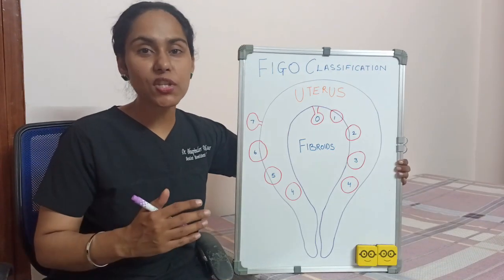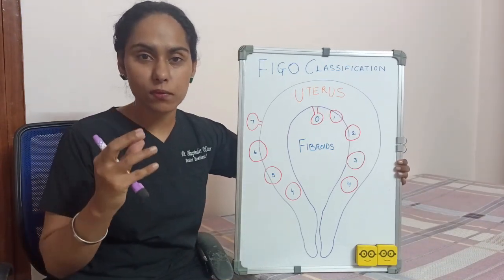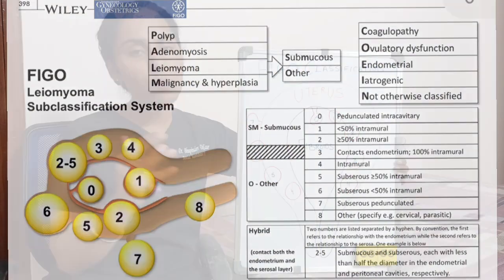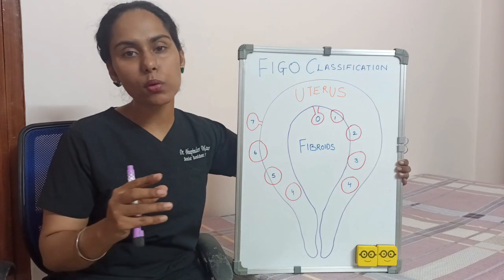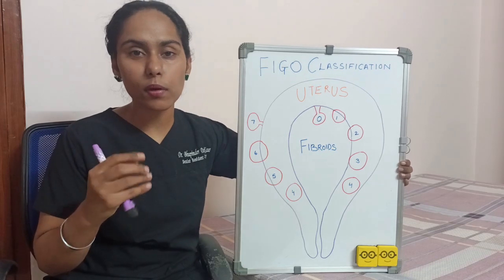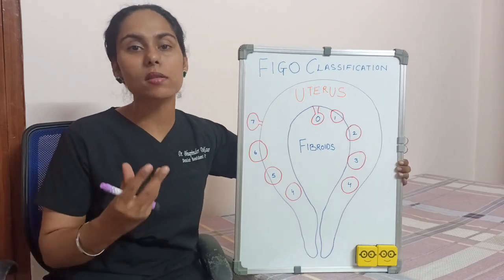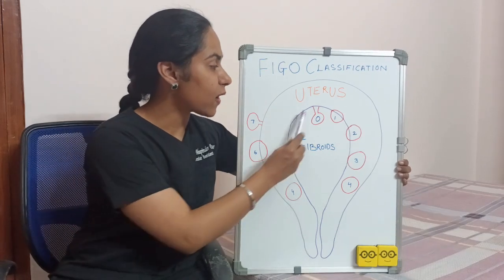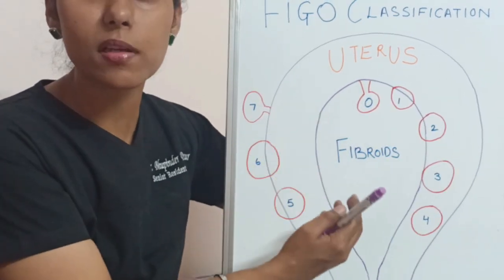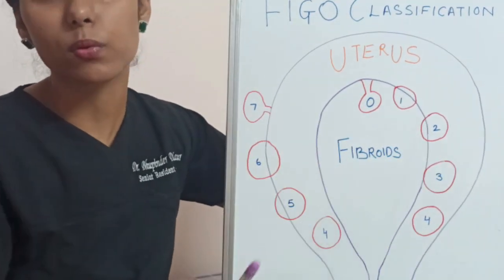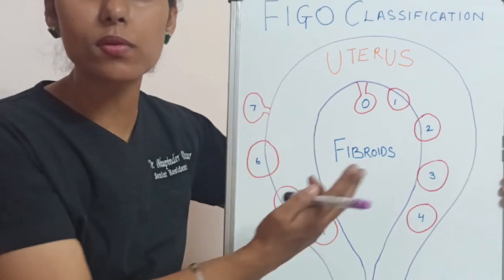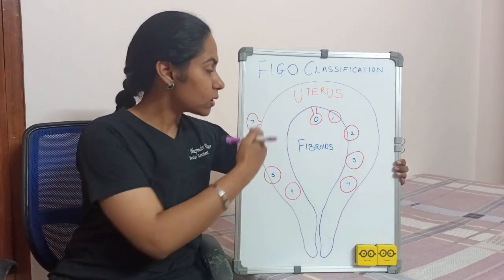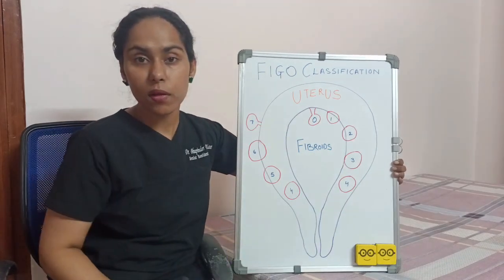Now let's discuss the classification of fibroids of the uterus as per the FIGO classification. Before going to that, I want to give you the concept of what is submucosal and what is subserosal. Submucosal means the fibroids are growing towards the cavity of the uterus, and subserosal means they are growing on the surface of the uterus towards the serosal layer.